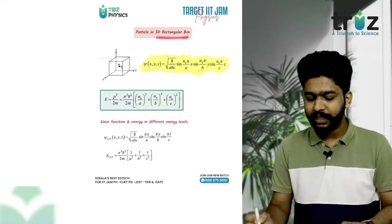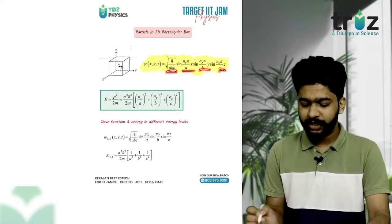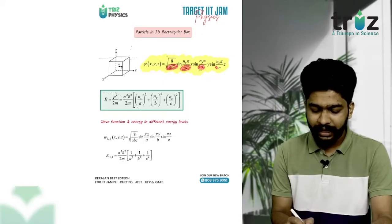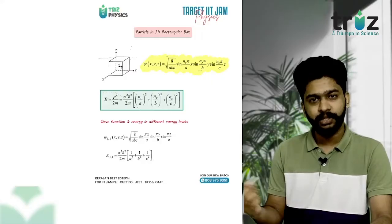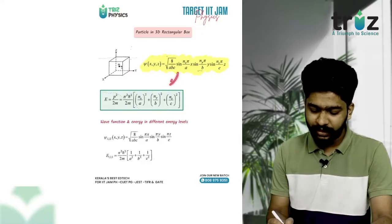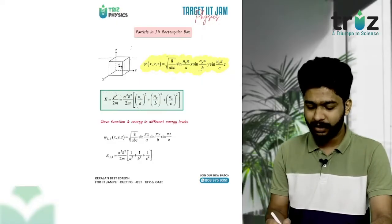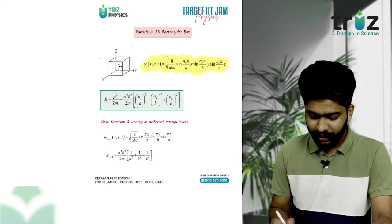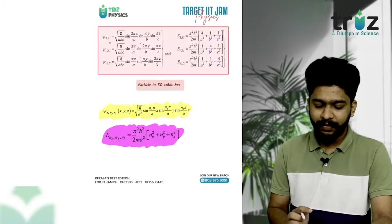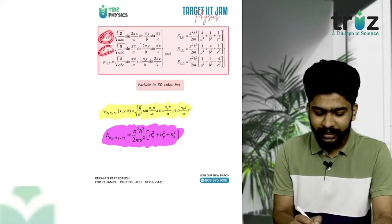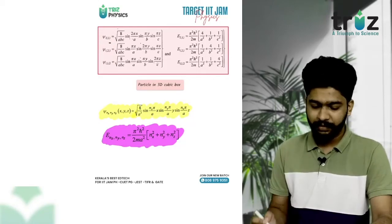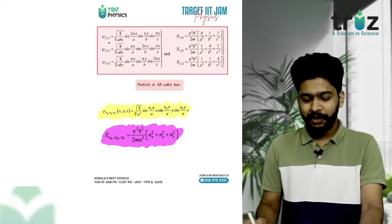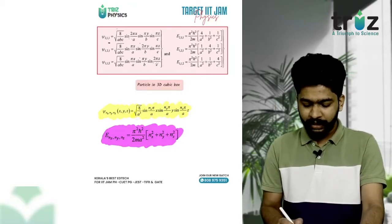The next topic is three-dimensional problems — very important. For a 3D box with dimensions A, B, C (length, breadth, height), and A = B = C for a cubic box, the energy is E = (n_x/A)² + (n_y/B)² + (n_z/C)². For the ground state, substitute n_x=n_y=n_z=1 to get the corresponding energy. Other combinations of quantum numbers give degenerate states. This three-dimensional cubic box problem involves degeneracy.